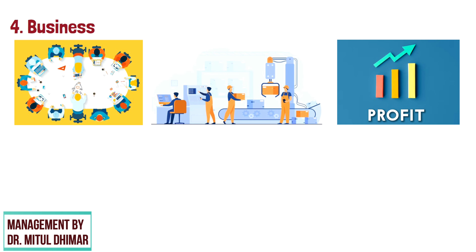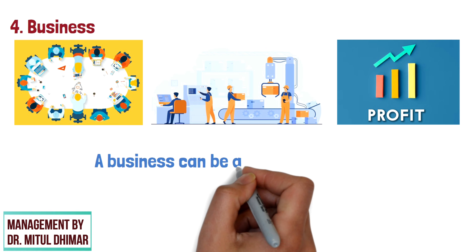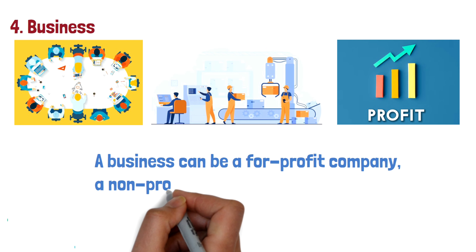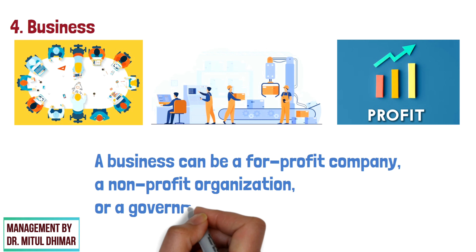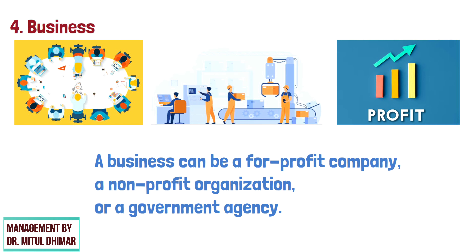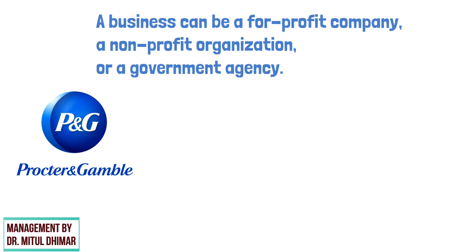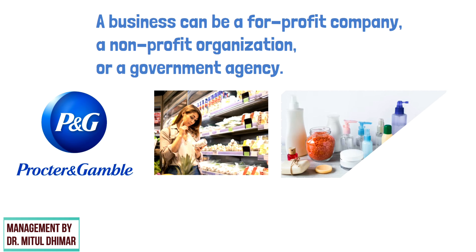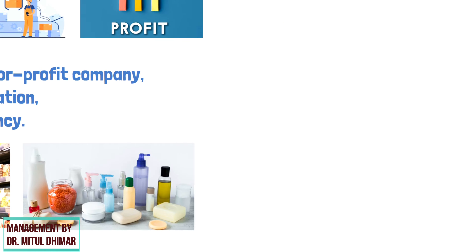A business refers to an organization that is engaged in producing and selling goods or services in order to make a profit. A business can be a for-profit company, a non-profit organization, or a government agency. For example, P&G is a consumer goods company that produces a wide range of household and personal care products.